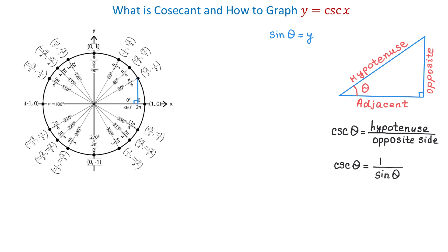Let's talk about the cosecant function. Because the cosecant is the reciprocal of sine, we can write that the cosecant of angle theta is 1 over y. So to find the cosecant of any angle on the unit circle, we will divide 1 by the y-coordinates of these points. Let's find a few values of the cosecant function using this formula and the unit circle.